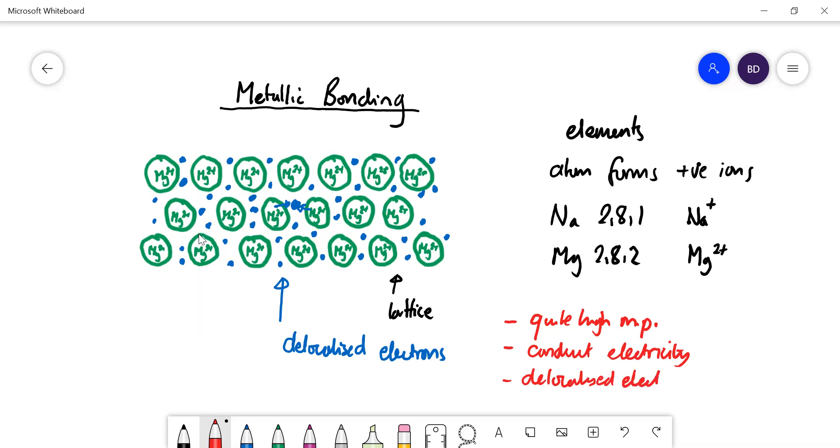The delocalized electrons will move and that's what an electric current is. So you apply a voltage to a piece of metal, all the electrons are going to move towards the positive voltage.